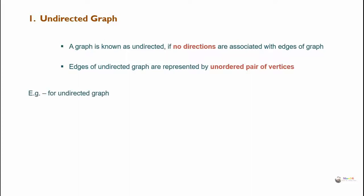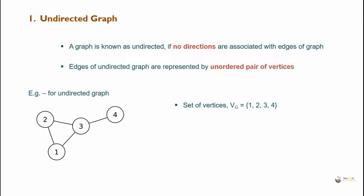Example for undirected graph: the graph has set of vertices V = {1, 2, 3, 4} and set of edges E as unordered pairs {1,2}, {1,3}, {2,3}, {3,4}. Since it is an unordered pair, the edge between 1 and 2 can be represented either by (1,2) or by (2,1).